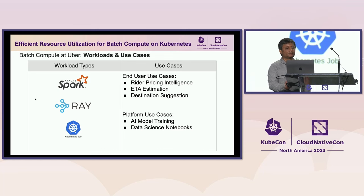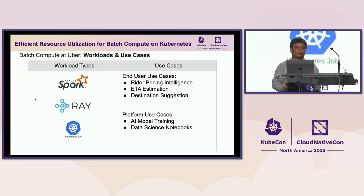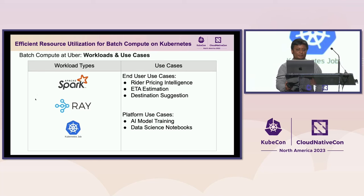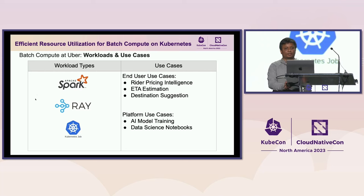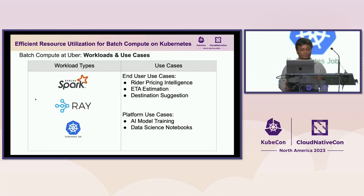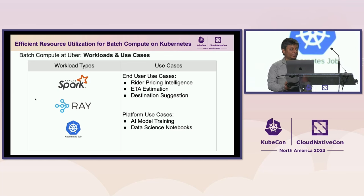To solve all these use cases, we largely depend on three types of processing frameworks: namely Spark, Ray Cluster and Ray Jobs, and Kubernetes V1 job. Spark jobs are solved through the Spark application CRD and the Spark operator, open-sourced by Google Cloud Platform. Ray jobs are solved through the Ray Cluster CRD and the Ray operator. And the Kubernetes V1 job is already present in the upstream version of Kubernetes — we literally use that.